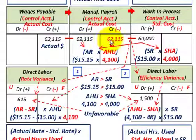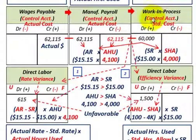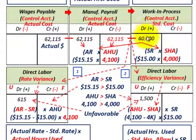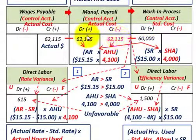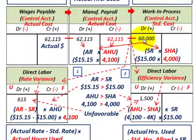Now we transfer that actual cost out — credit manufacturing payroll by $62,115 and debit work in process at the standard cost of $60,000. We're not recording the actual cost in WIP; it's based on the standard cost established for the project. So there's a difference between the actual cost of $62,115 and the standard cost of $60,000 — a variation of $2,115.